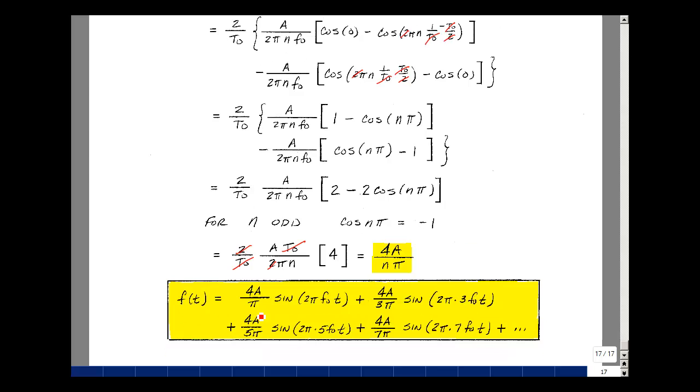So now I can find my Fourier series. My first term is going to be 4A over π, when n is equal to 1, then n is equal to 3, 5, 7, and so on. My frequency is f0, and then 3f0, 5f0, and 7f0.